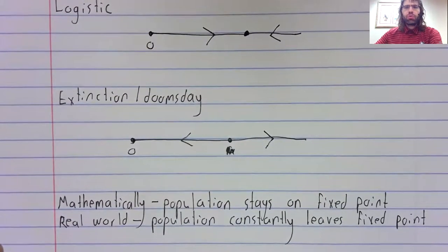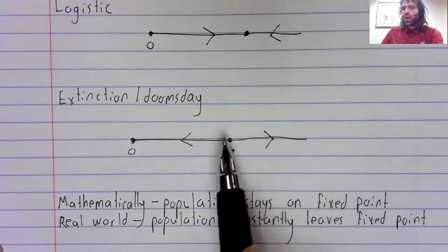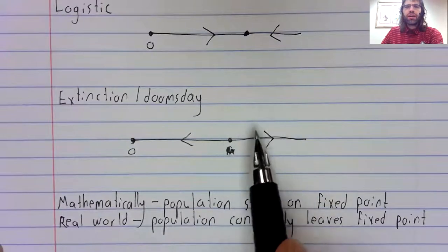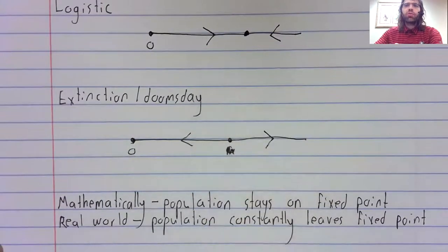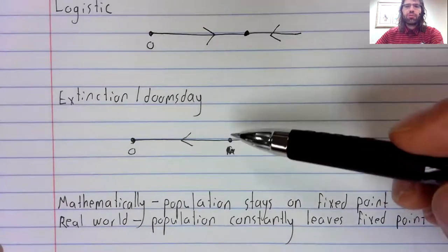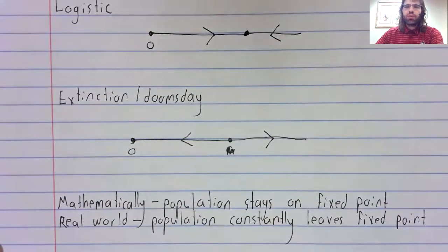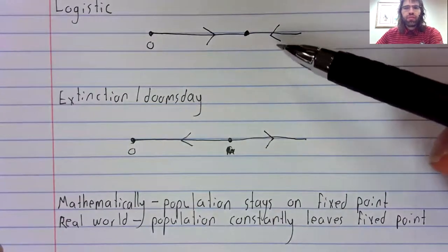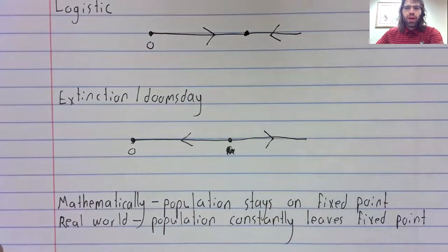Every real-world model is subject to constant random perturbations that cause the value of the population to move around in ways that the model doesn't predict. For example, neither of these models say anything about the weather. Neither of these models explicitly address food sources. Both of these models assume that the death rates will be constant.